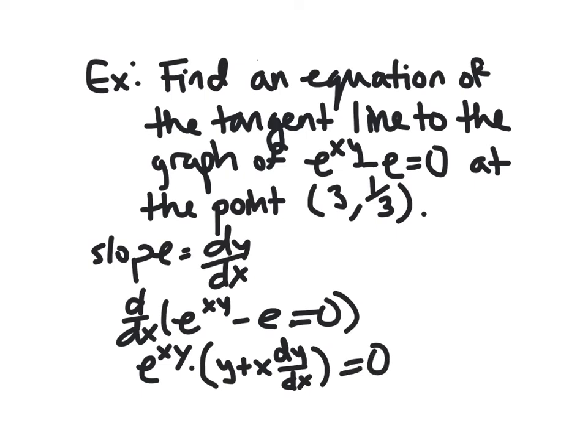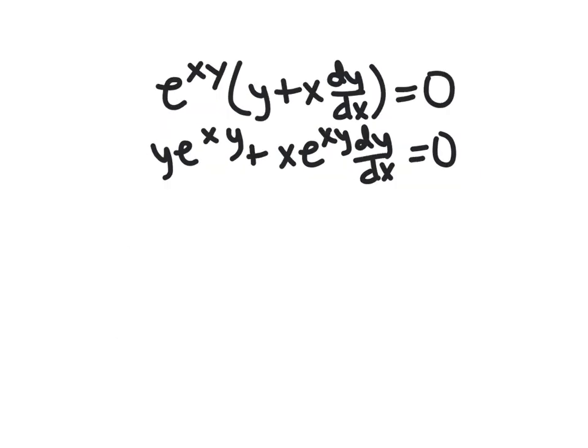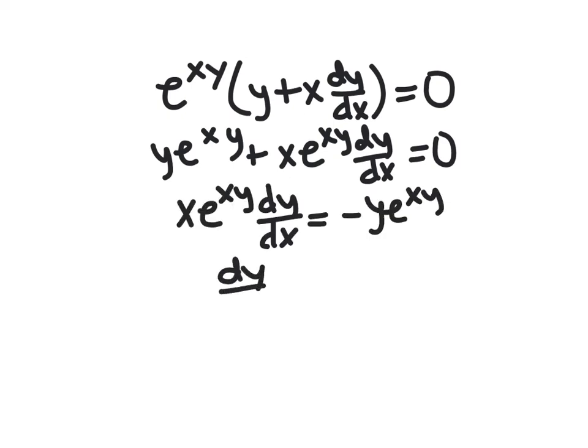And then we can solve. So first we distribute here. And then this is going to allow us to solve for dy/dx. So we would just want to subtract over the y e to the xy. And then we divide. And that gets dy/dx by itself. And of course, we don't have to worry about dividing by 0 here. E to anything is positive. These guys are going to cancel. And so we just get negative y over x.